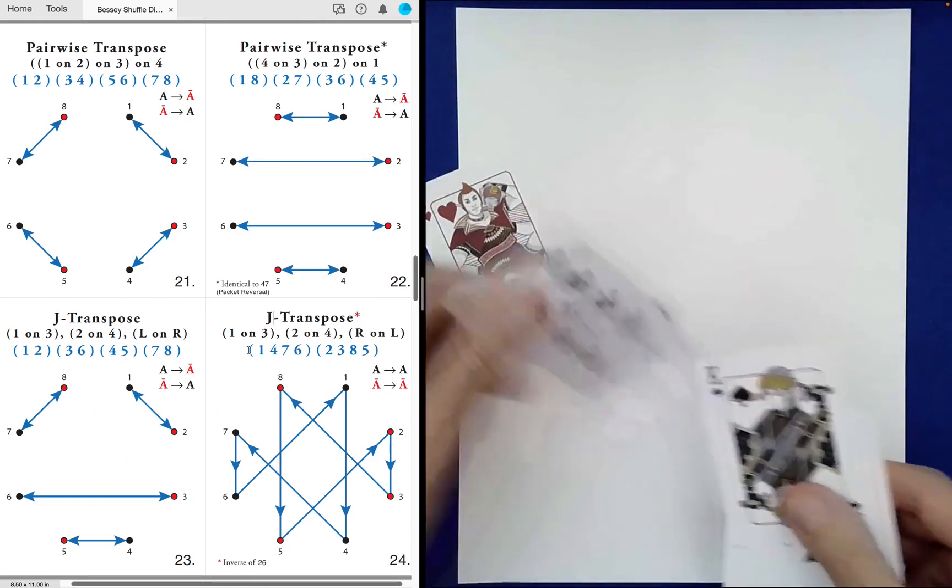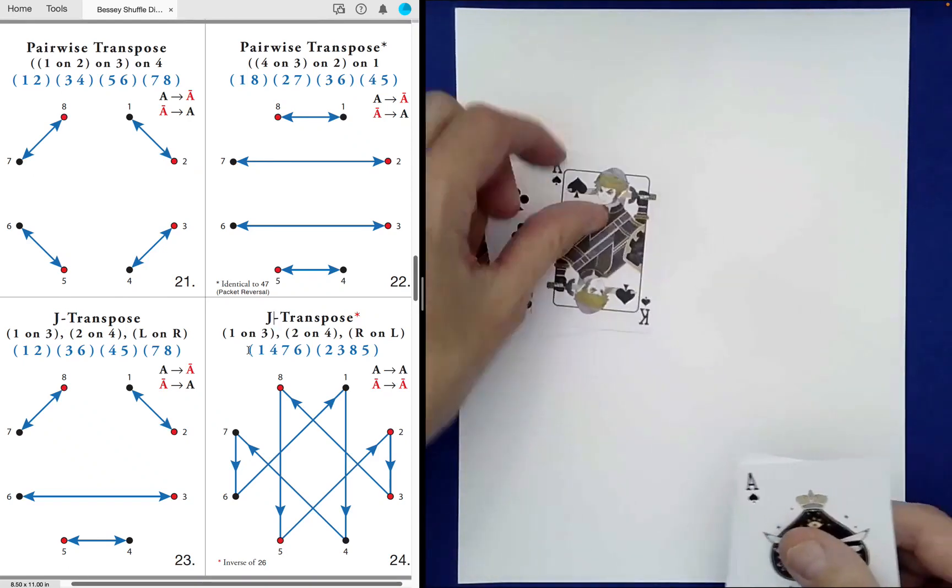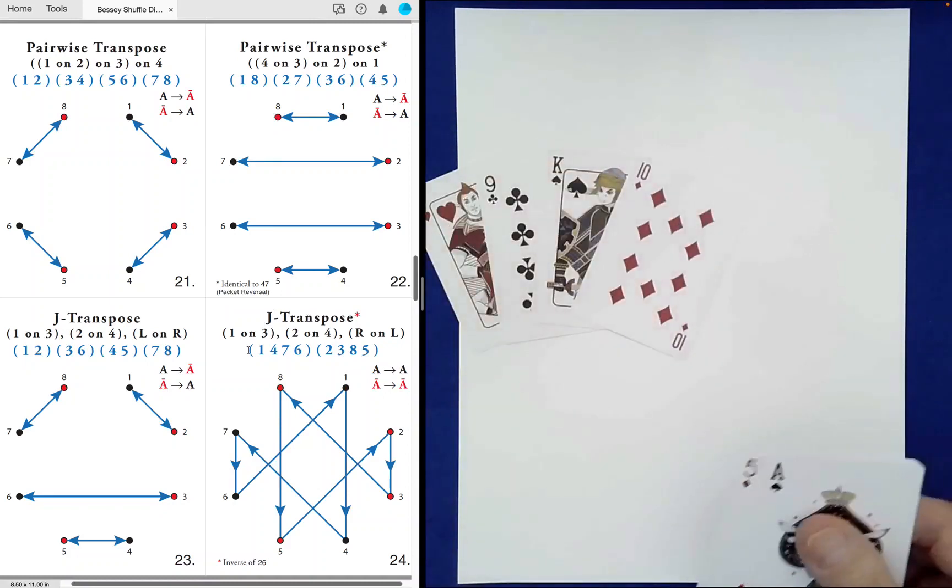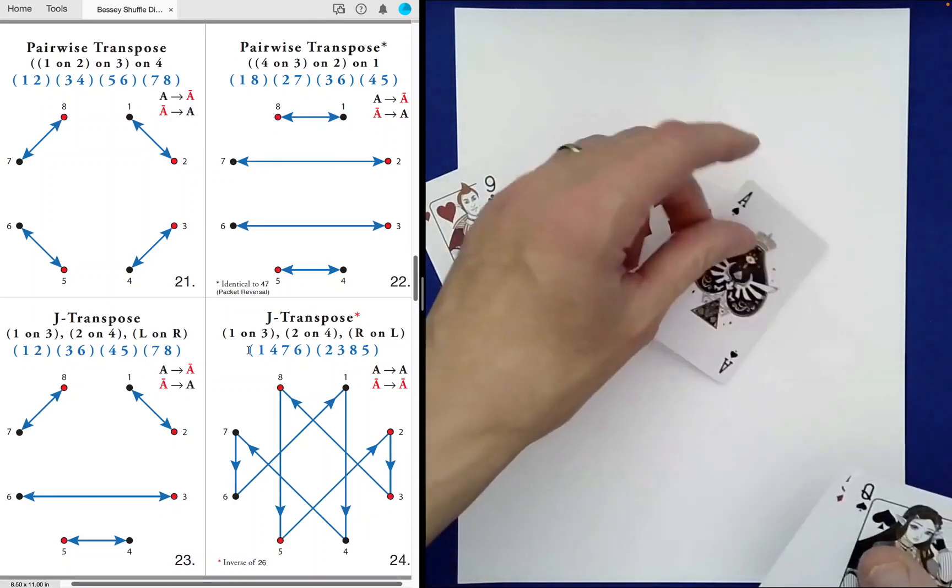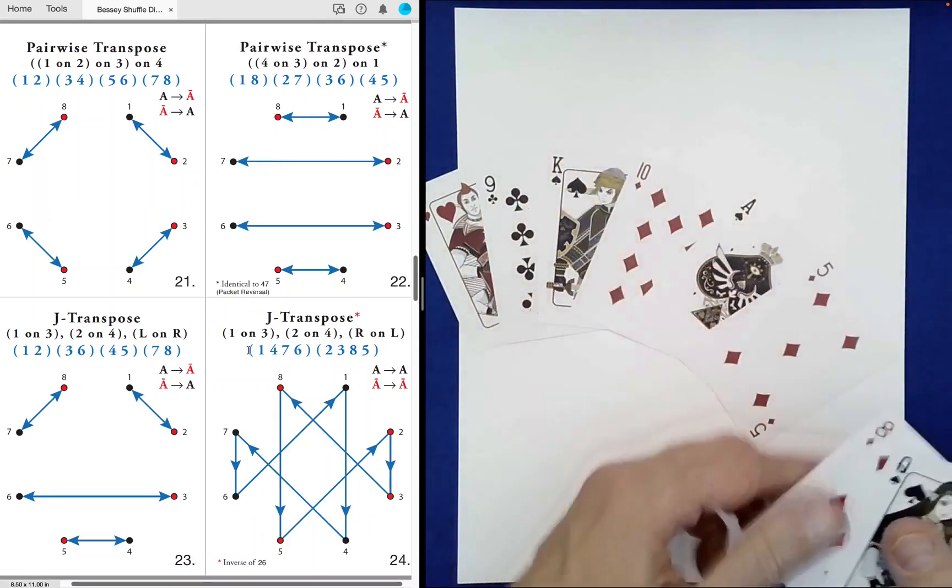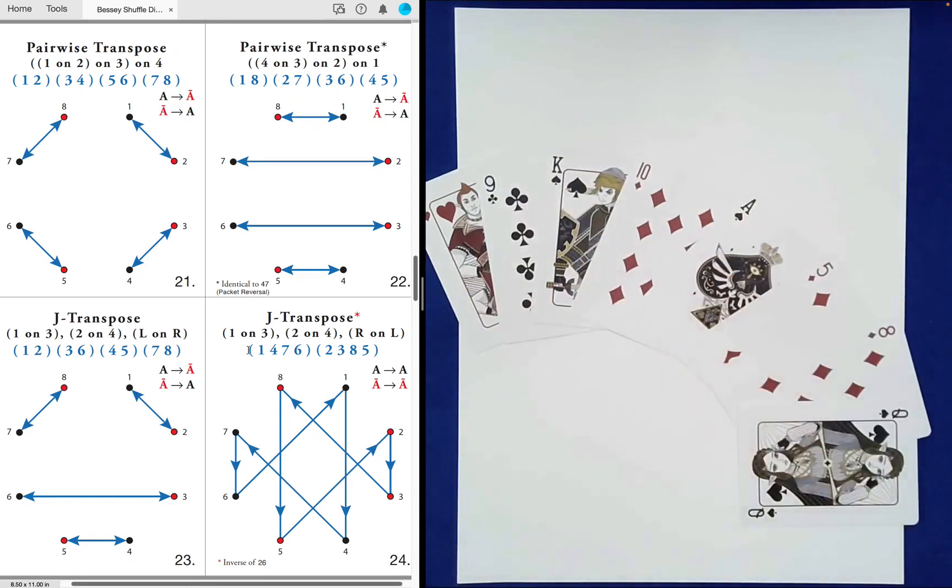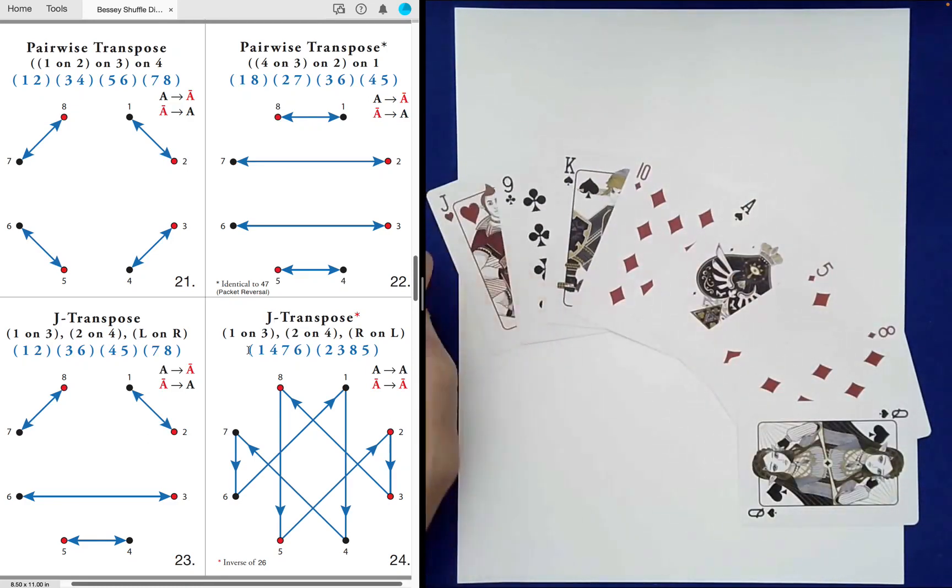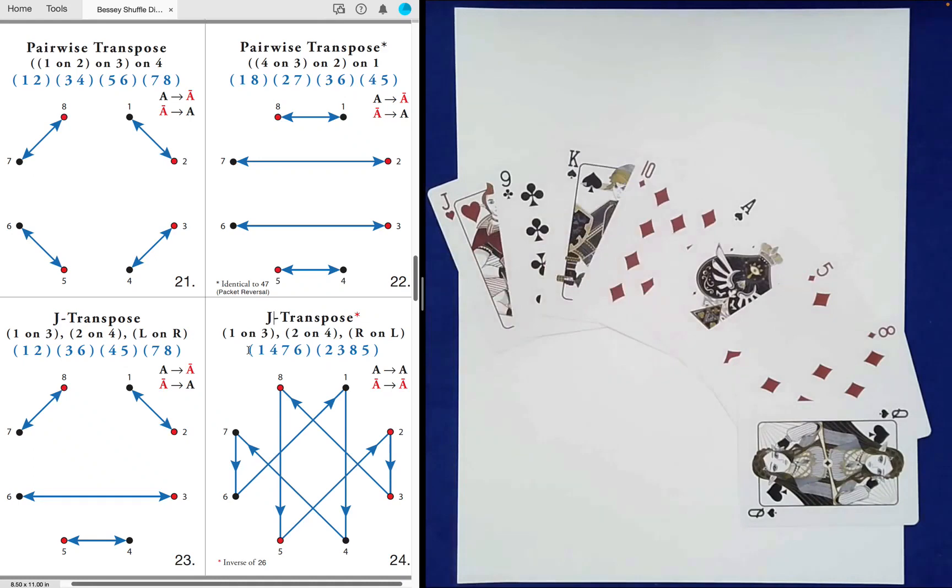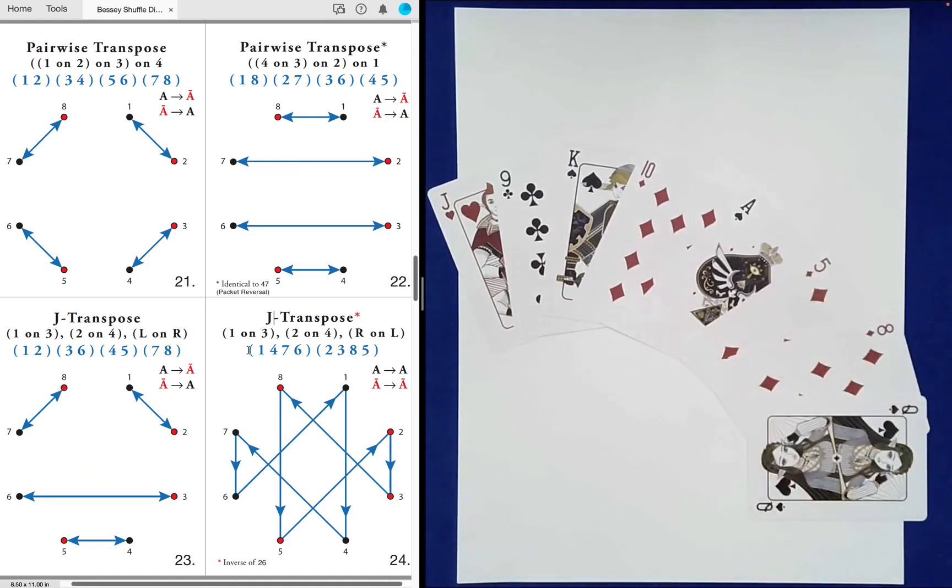So what I did was, I built a Bessie sequence relative to card color. Well, think about what would that be? A Bessie sequence relative to card color. Well, we would need something like red, black, black, red, followed by black, red, red, black.